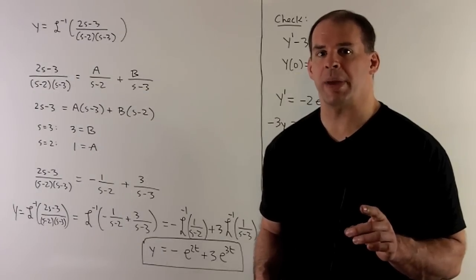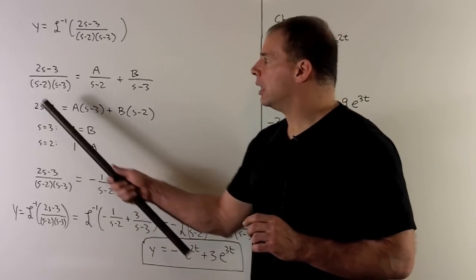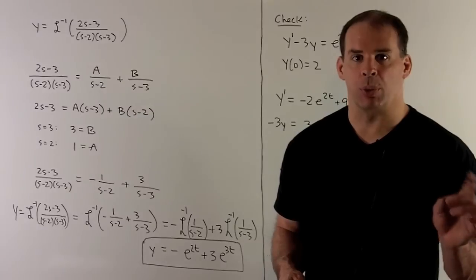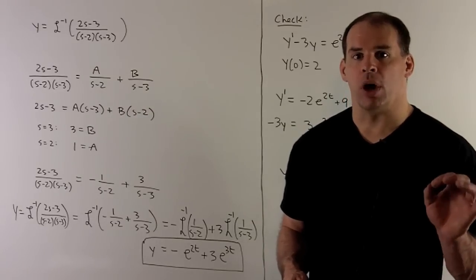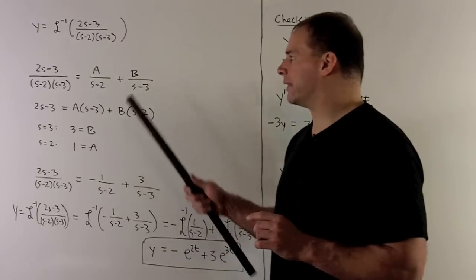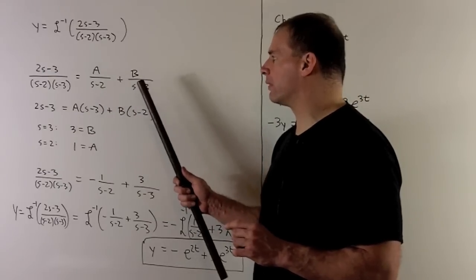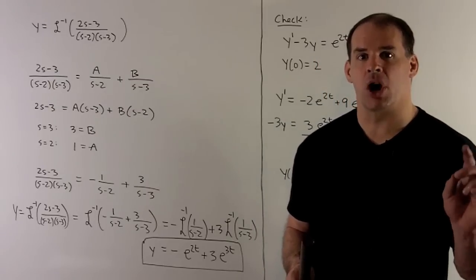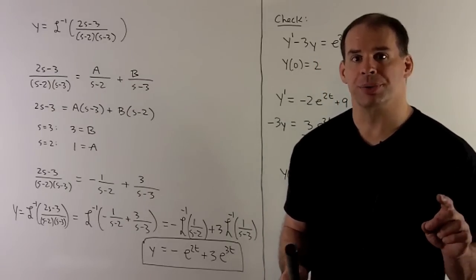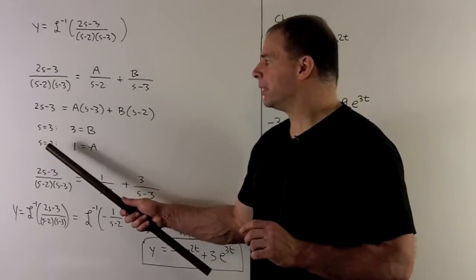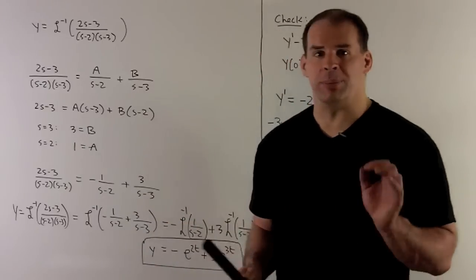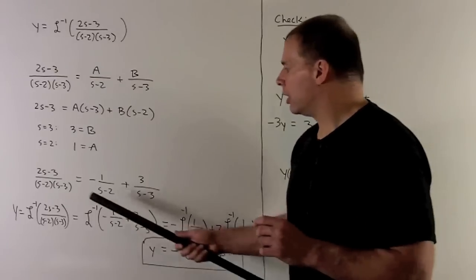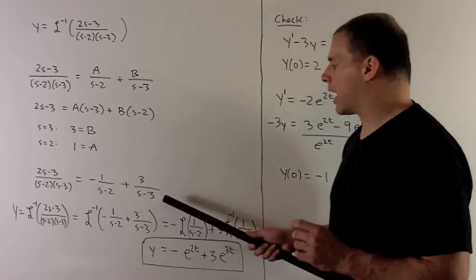For the partial fraction expansion, we have only linear factors in the denominator with exponents equal to 1, so we have one term for each factor: a over s minus 2, plus b over s minus 3. We clear out the denominators and target the zeros by letting s equal 3 and s equal 2. We get b equals 3 and a equals minus 1, giving us our partial fraction expansion.